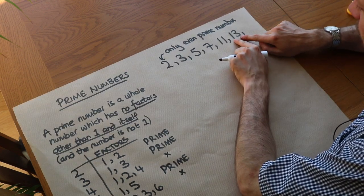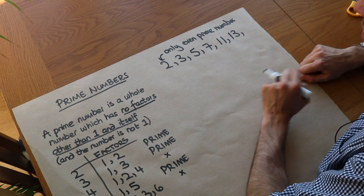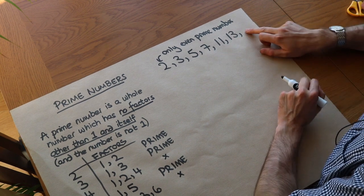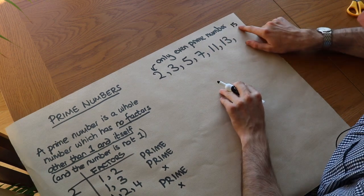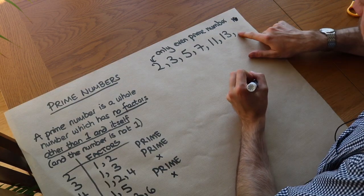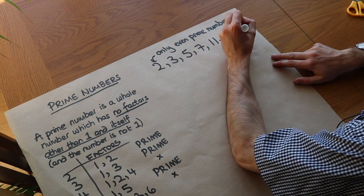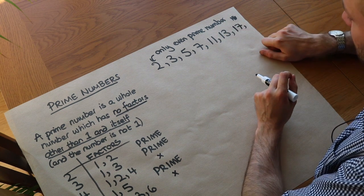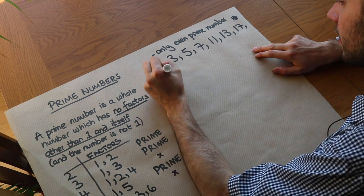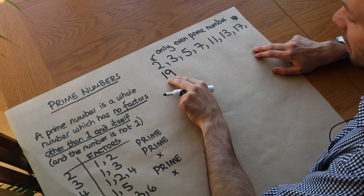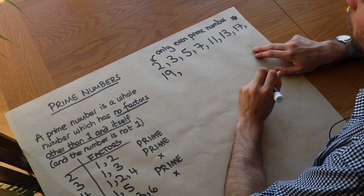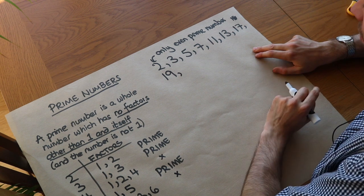For example, 13: one plus three equals four, which is not a multiple of three, so 13 doesn't divide by three. But 15: one plus five equals six, which is a multiple of three, so 15 is in the three times table. Seventeen is prime — the digits don't add up to a multiple of three, and it doesn't end in five or zero. Nineteen: the digits add up to 10, so it doesn't divide by three or five — it is prime. Twenty-one: digits add up to three, so it divides by three and is not prime.